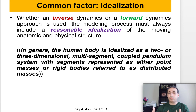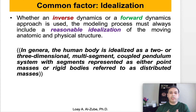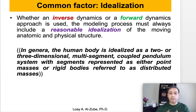Before getting into what is inverse and forward dynamics and how we use those two methodologies, we need to understand something called idealization. Whether you're using inverse or forward dynamics approach, we must always include reasonable idealization of the structure that we are analyzing — in this case, the human body, which is the anatomical and physical structure that is moving. We tend in biomechanics and rehabilitation engineering to idealize the human body in a two- or three-dimensional multi-segment coupled pendulum system, with each segment represented as either mass points or rigid bodies referred to as distributed masses.